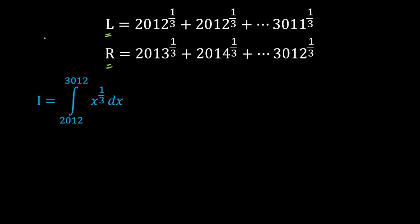That gives me a hint. I is given as the integration of x to the power 1/3 dx from 2012 to 3012. I can integrate x raised to power 1/3 — there is no big deal. But the problem is how am I going to compare it with L and R? For that, I am going to write I as a summation of cube roots of numbers. The moment I do that, I can immediately compare with L and R. That's the hint.